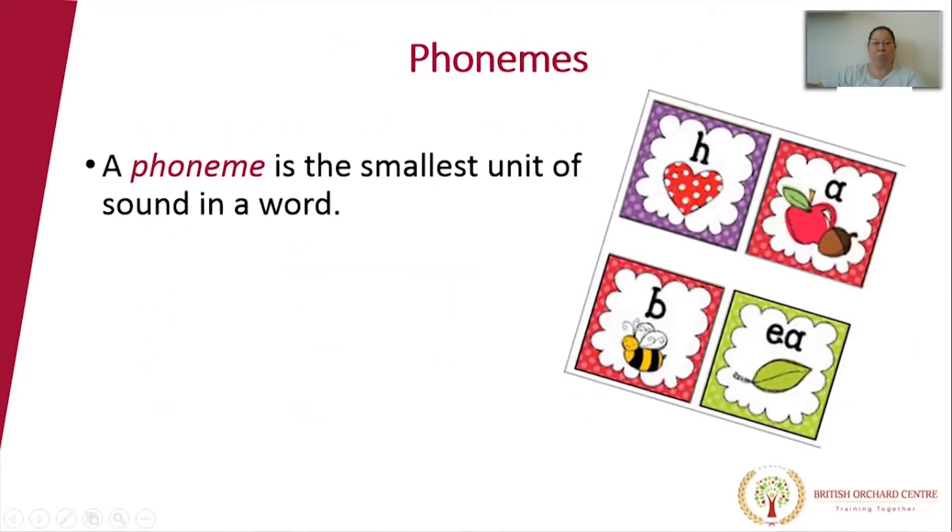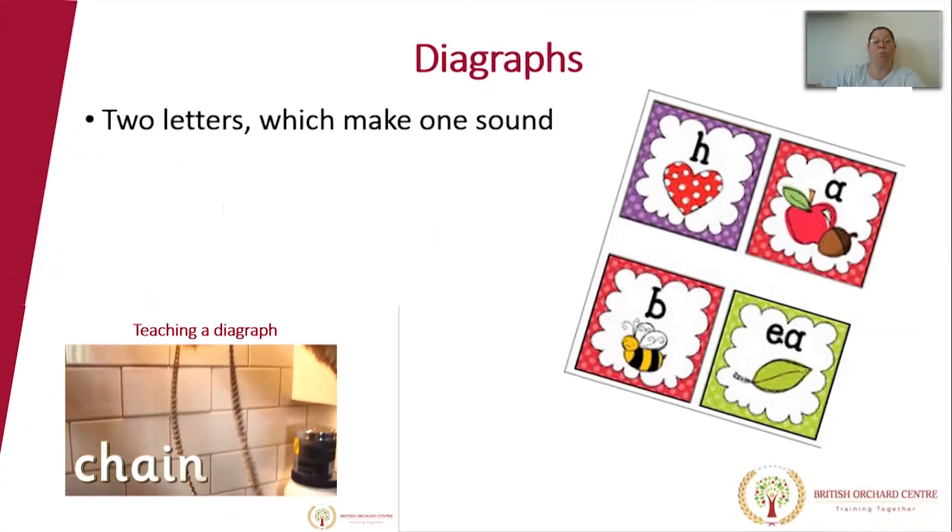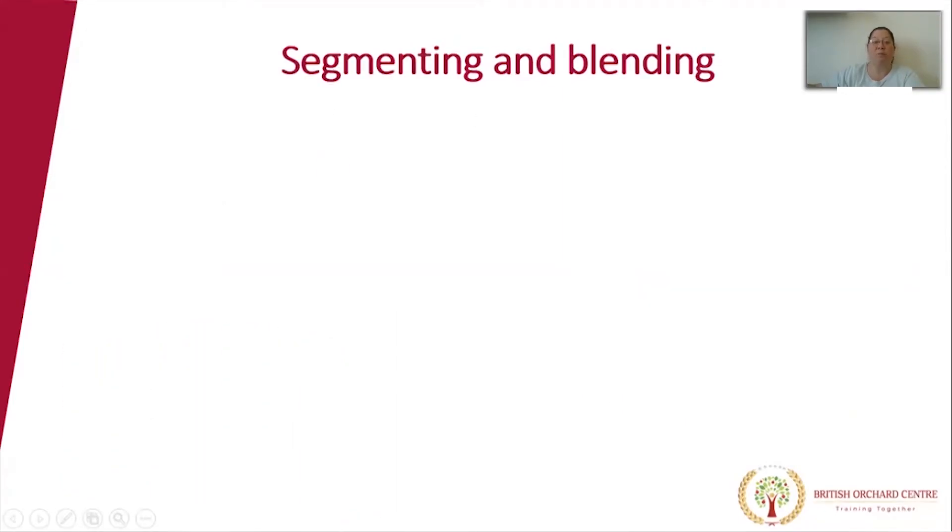So let's look at phonemes. A phoneme is the smallest unit of sound in a word. Digraphs—where two letters make one sound. Segmenting and blending are a huge part of Phase One and Phase Two, but the difference is...